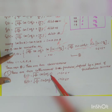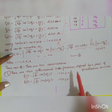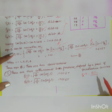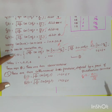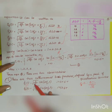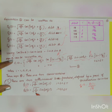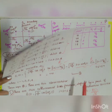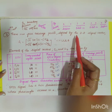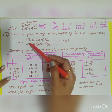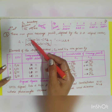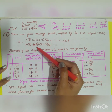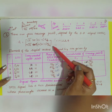The two orthonormal basis functions are defined by a pair of quadrature carriers: φ1(t) = sqrt(2/T) · cos(2πf_c·t) and φ2(t) = sqrt(2/T) · sin(2πf_c·t). This is the first observation. The second observation is that there are four message points defined by the 2D signal vector: s_i = [sqrt(E)·cos((2i−1)π/4), −sqrt(E)·sin((2i−1)π/4)], for i = 1, 2, 3, 4.